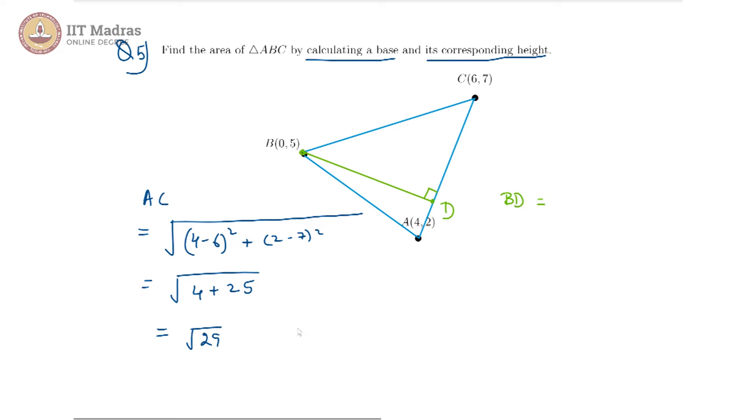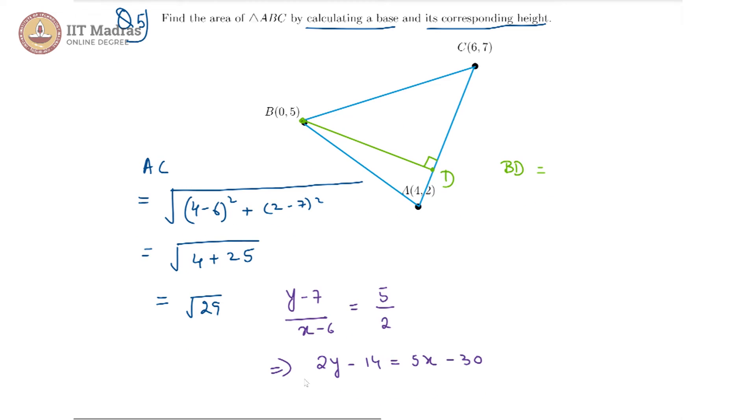For that, let us use the two point form because we have two points. We will get y minus 7 by x minus 6 is equal to 7 minus 2 is 5 by 6 minus 4 is 2. So 2.5. Anyway, if we cross multiply, we get 2y minus 14 is equal to 5x minus 30 which gives us the equation to be 5x minus 2y minus 16 is equal to 0.